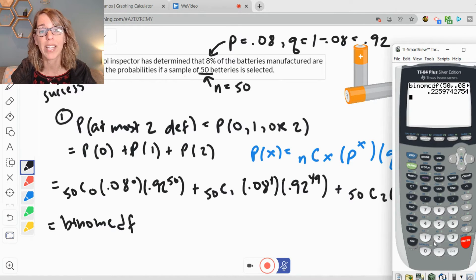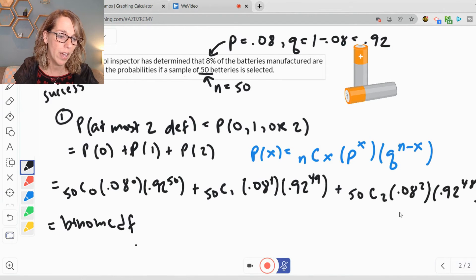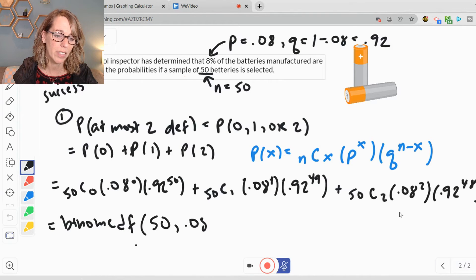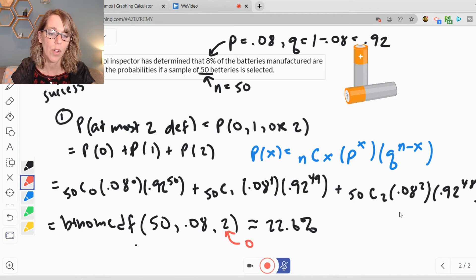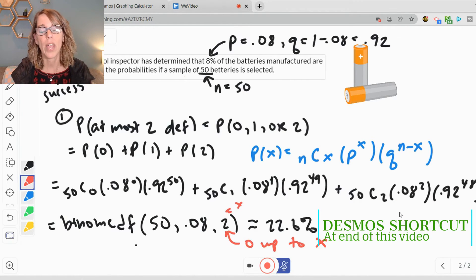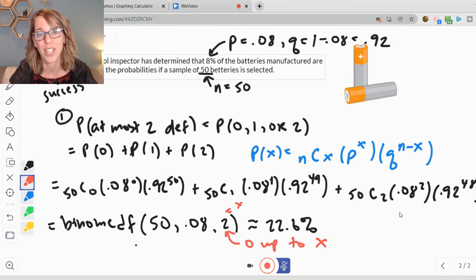A pretty decent probability. 22.6% is my probability there. Let's go ahead and put that up here. This is going to be 50, comma, 0.08, comma, 2. And this is about 22.6%. So a pretty decent probability. And then remember that that number on the end here with this formula is 0 up to x. And the number that we type in here is equal to x. So about 22.6%. If you were to type all of the cases in like I've got up above, you'll get the very same thing.